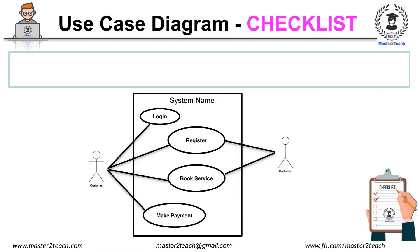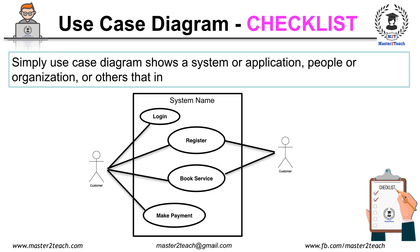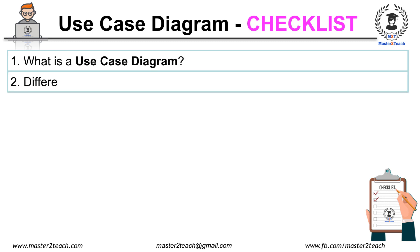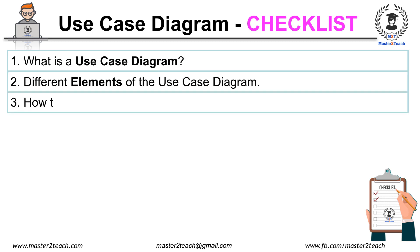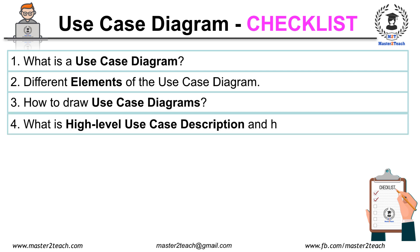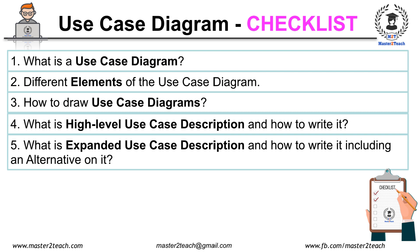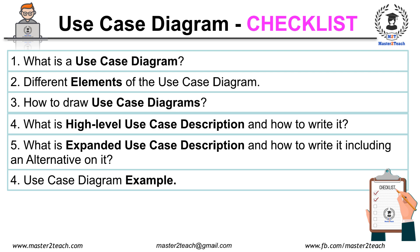Use case diagram. Simply, a use case diagram shows a system or application and the people, organizations, or other entities that interact with the system. It is a very high level diagram and typically won't show a lot of detail, but it's a great way to communicate complex ideas in a fairly basic way. We have already learned what is a use case diagram, its different elements, how to draw it, what is high level use case description and how to write it, and what is expanded use case description including alternatives.